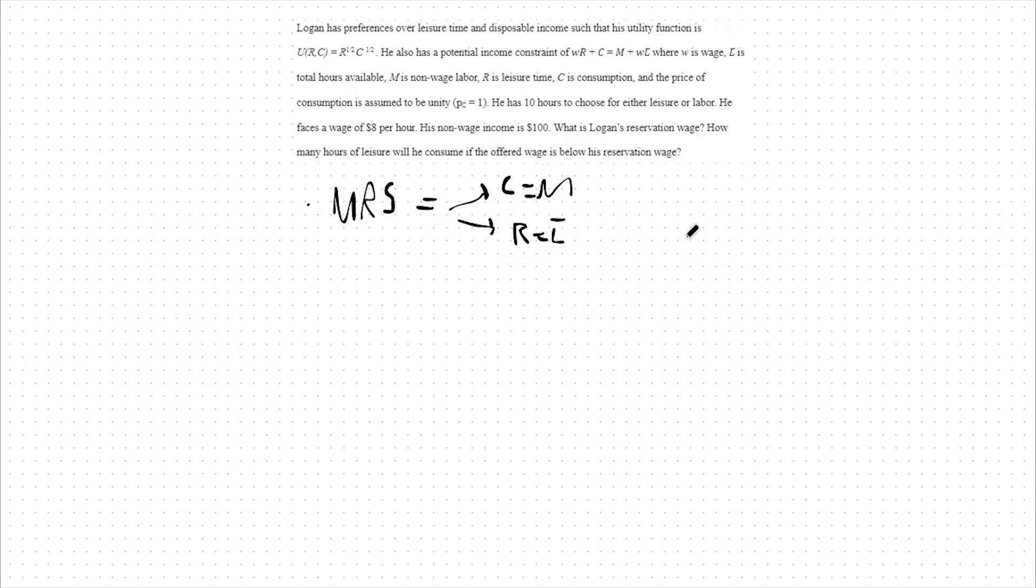This is because we're at the point where we're just about to consider starting to work. As such, in this specific example, we face a utility function of recreation to the one half times consumption to the one half. We face an L bar, or total number of hours available to us, of 10 hours, and a non-wage income of 100.